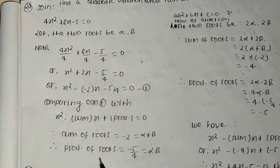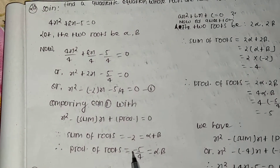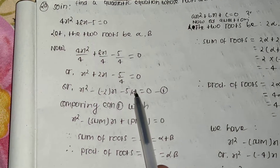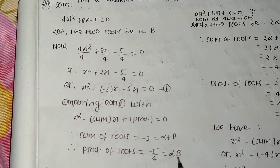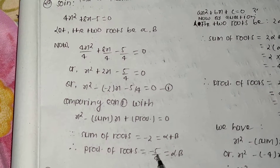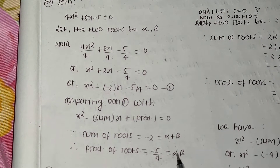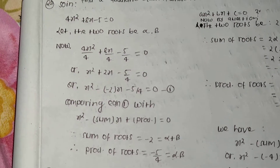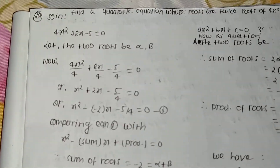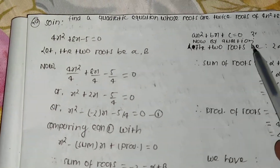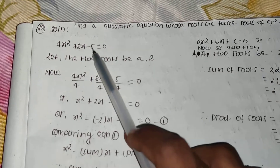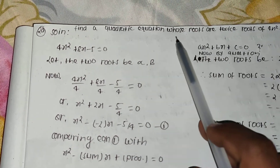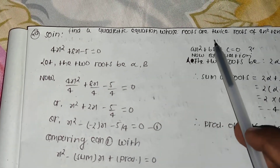Therefore the product of the roots is -5/4, equal to alpha × beta. The question asks us to find a quadratic equation whose roots are twice the roots of 4x² + 8x - 5 = 0.